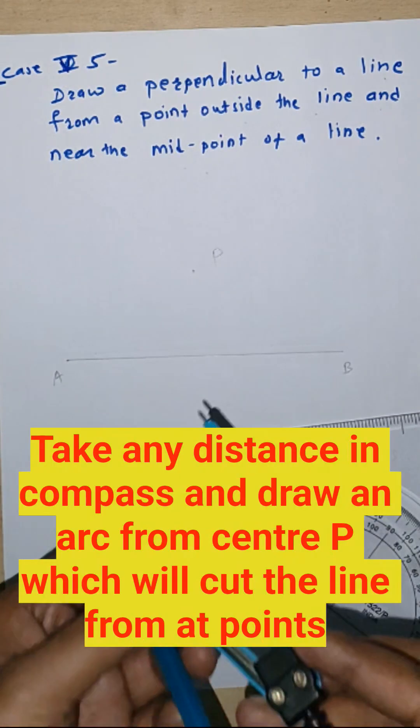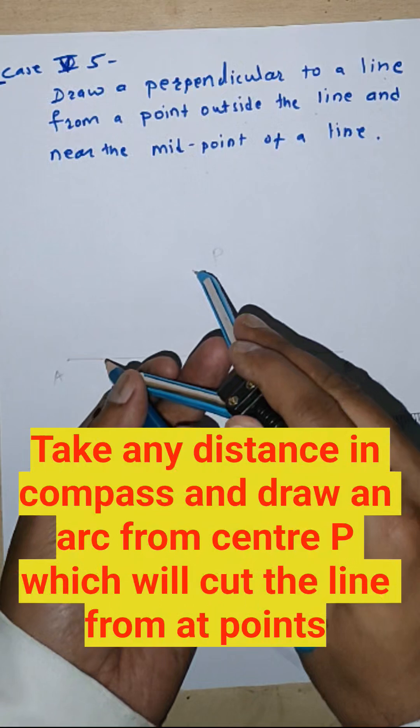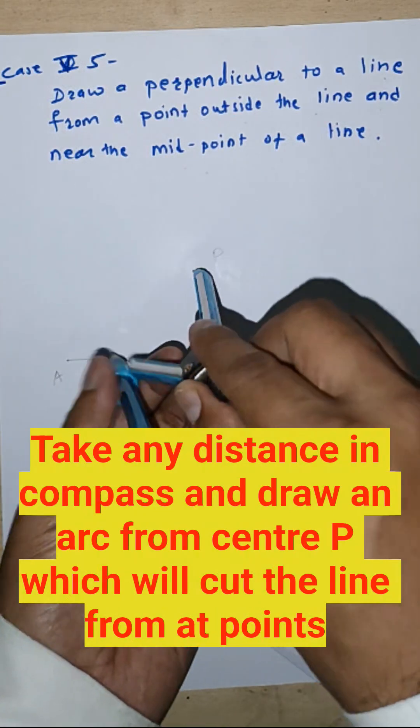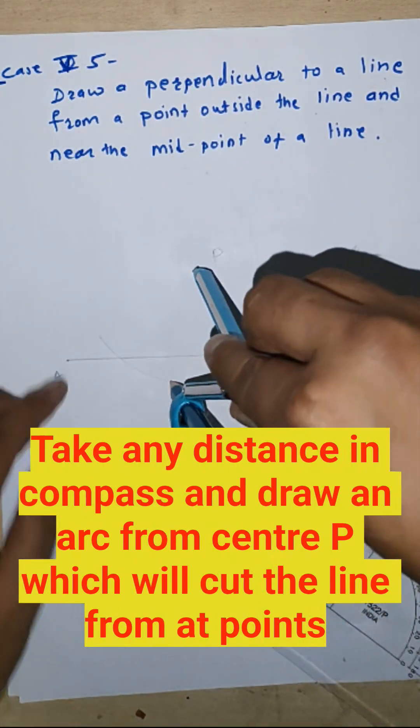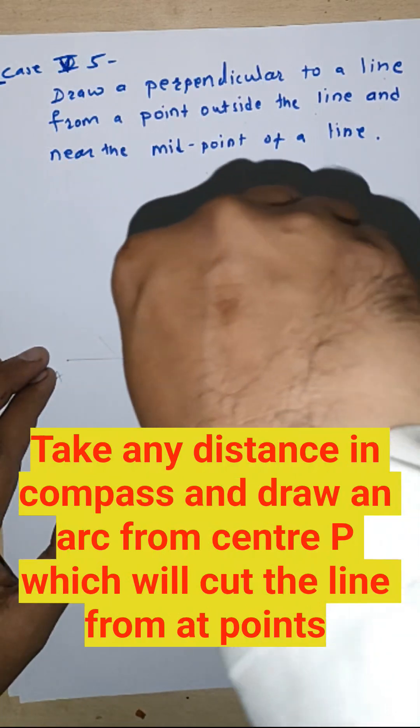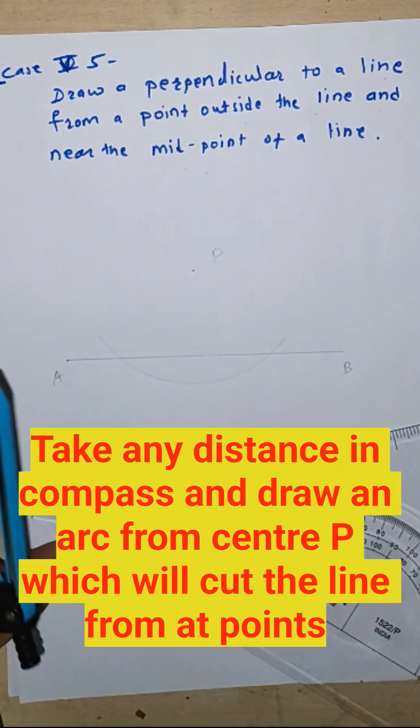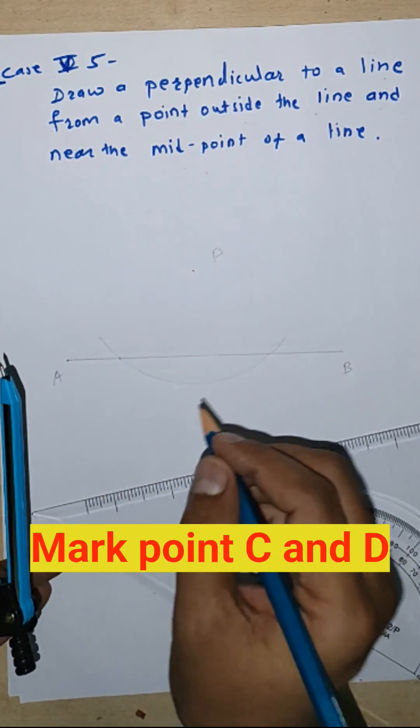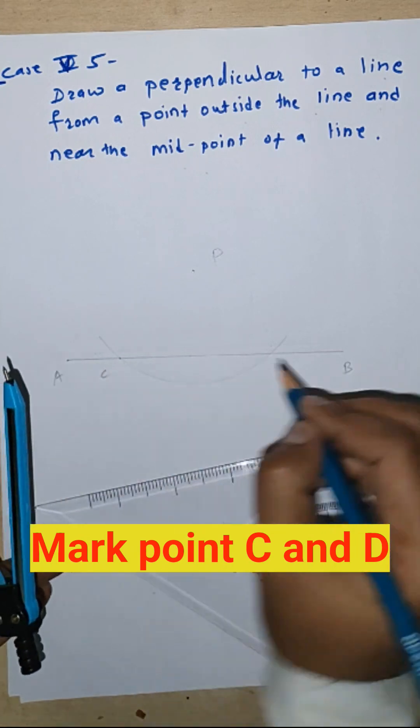Take any distance in the compass which will cut the line at two points. We will get point C and point D.